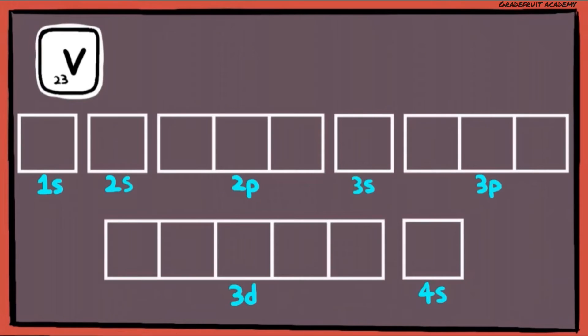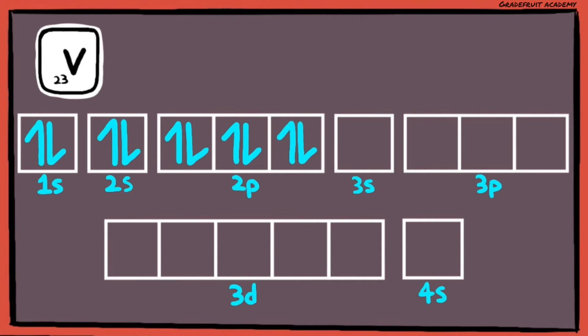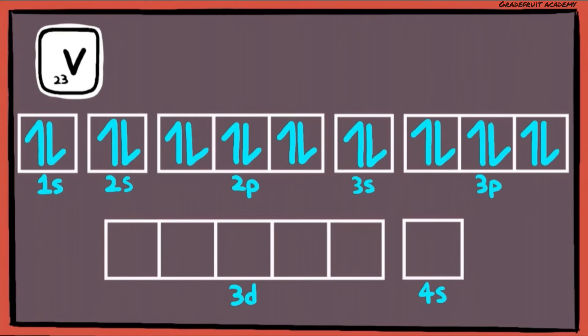What about vanadium? Vanadium has 23 electrons, so this is how we fill it up: 1, 2, 3, 4, 5, 6, 7, 8, 9, 10, 11, 12, 13, 14, 15, 16, 17, 18.